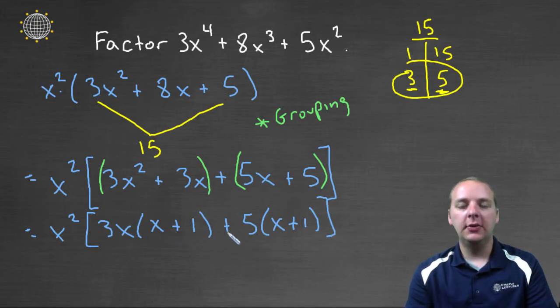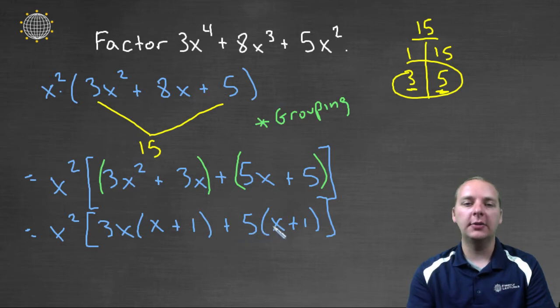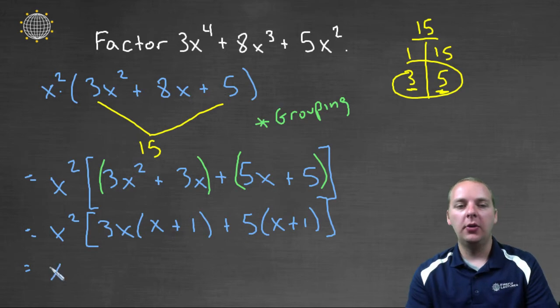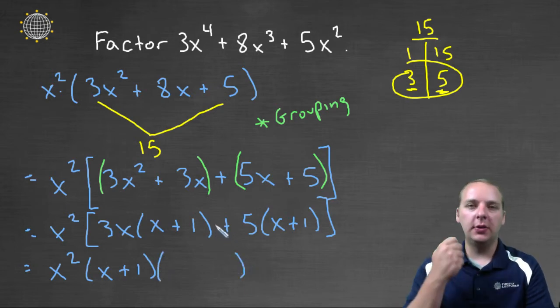Then you look at these two guys, and you'll notice each of these have a common factor of x plus 1. So if you pull that x plus 1 common factor out, you'll have x squared, then you'll have an x plus 1.